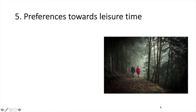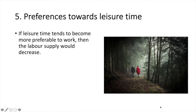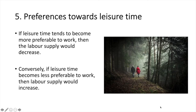5. Preferences towards leisure time. If leisure time tends to become more preferable to work, then the labour supply would decrease. Conversely, if leisure time becomes less preferable to work, then labour supply would increase. If the cost of living is rising in a region, then work may become more preferable to leisure.